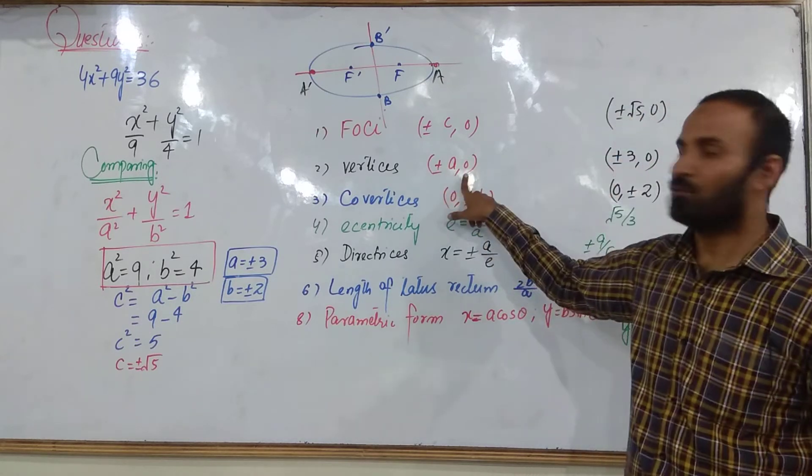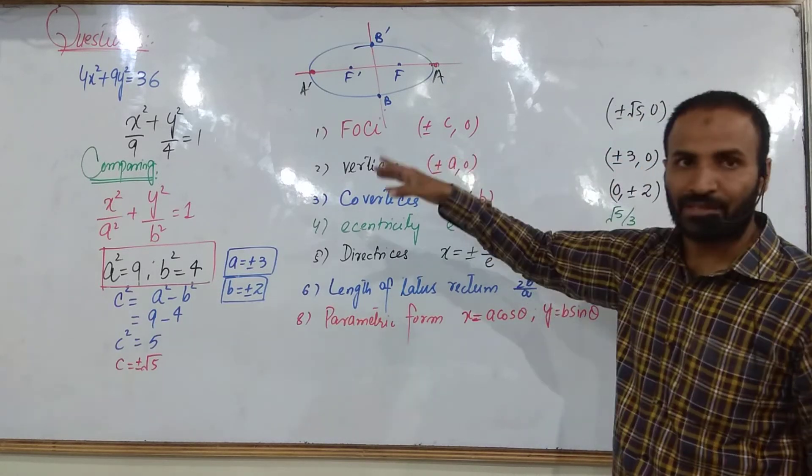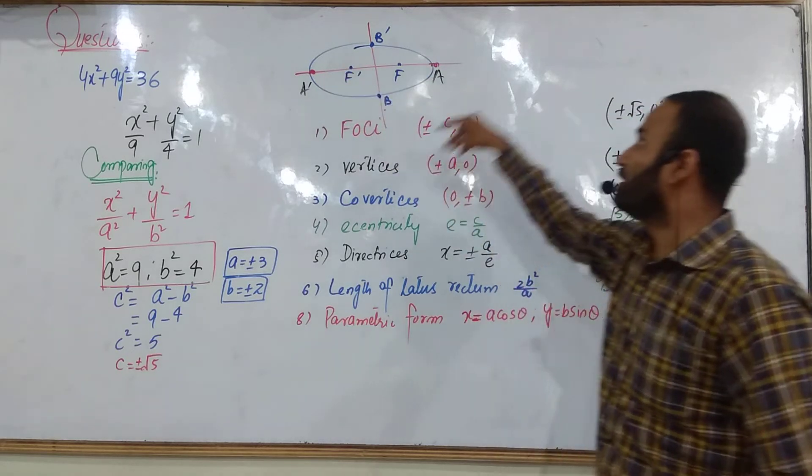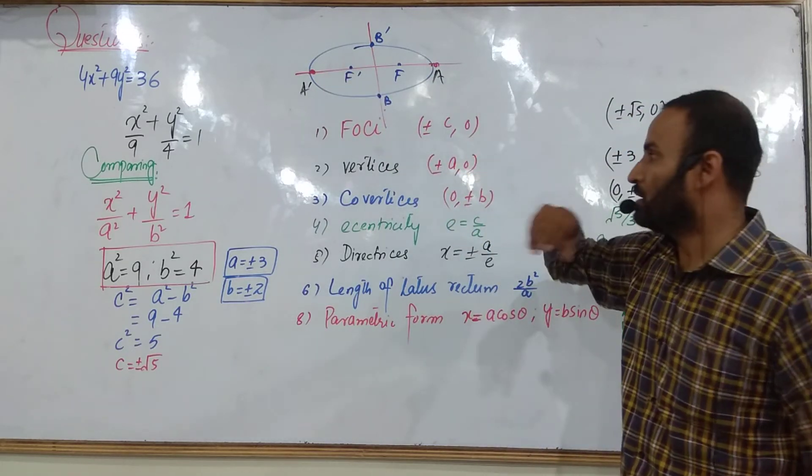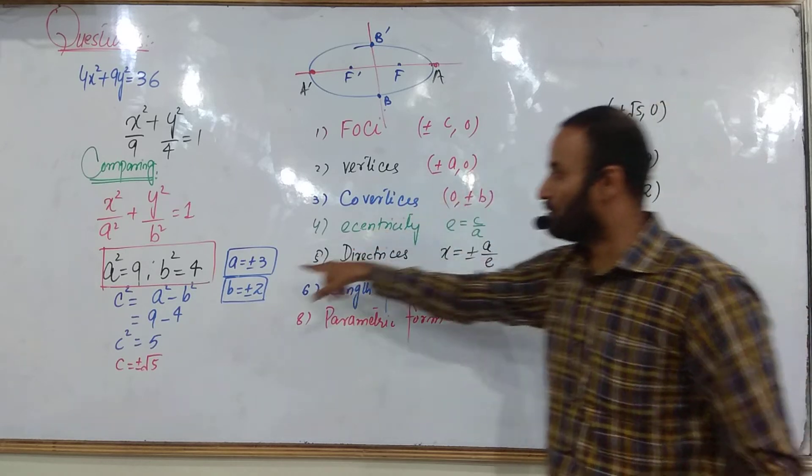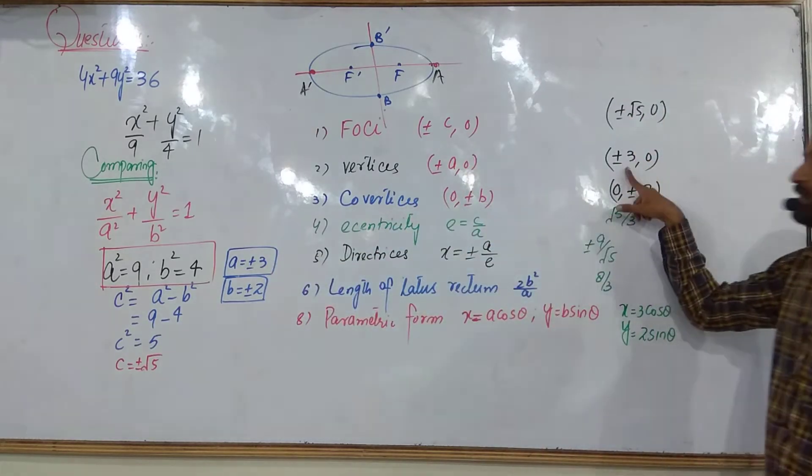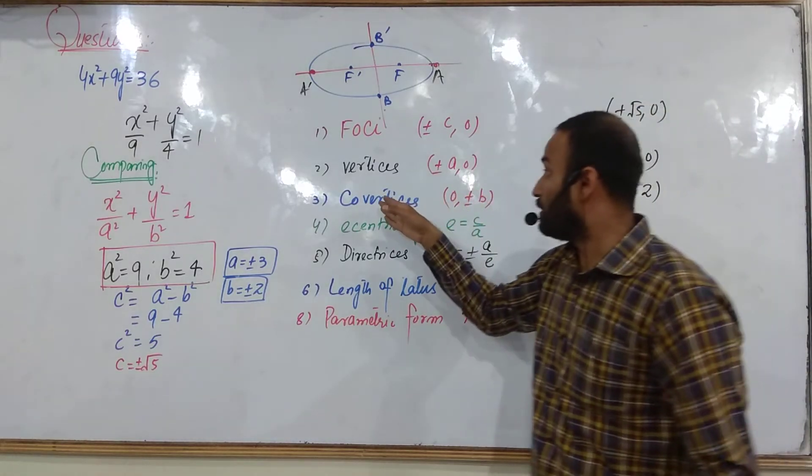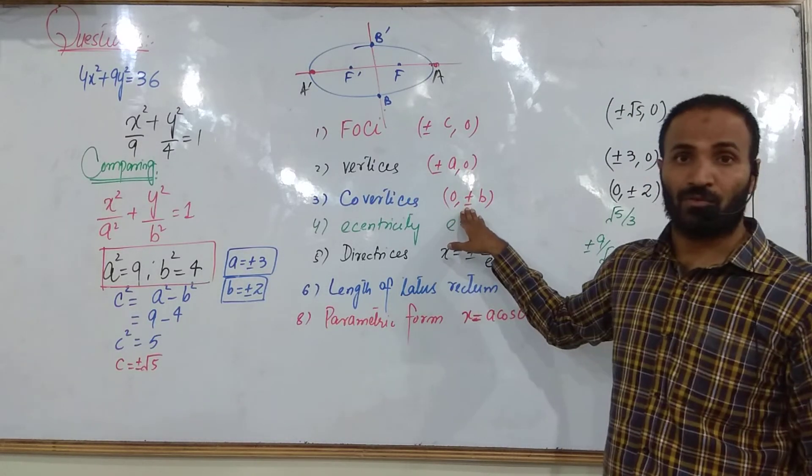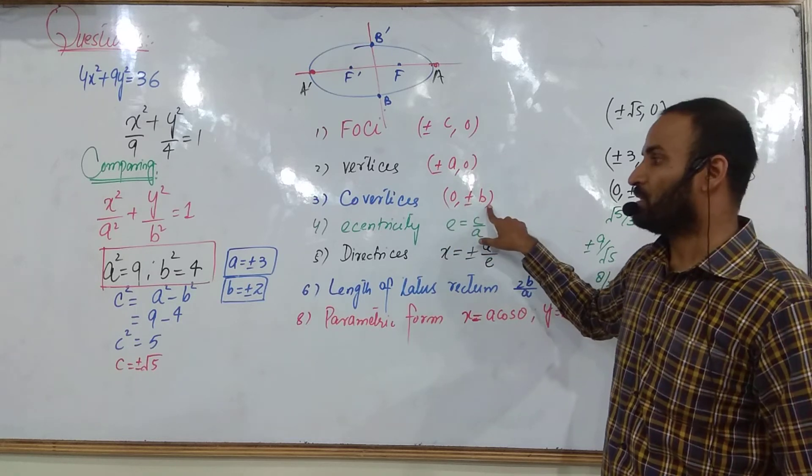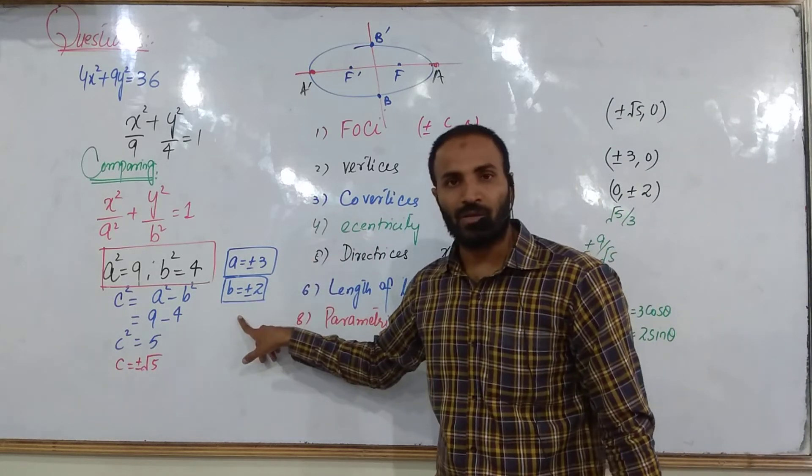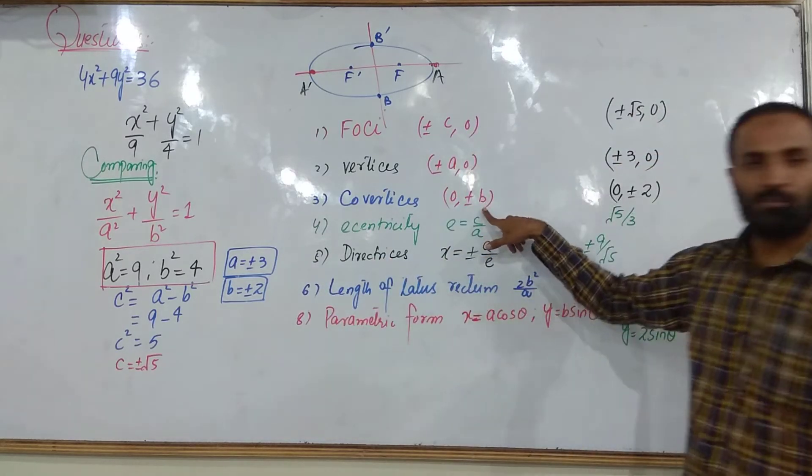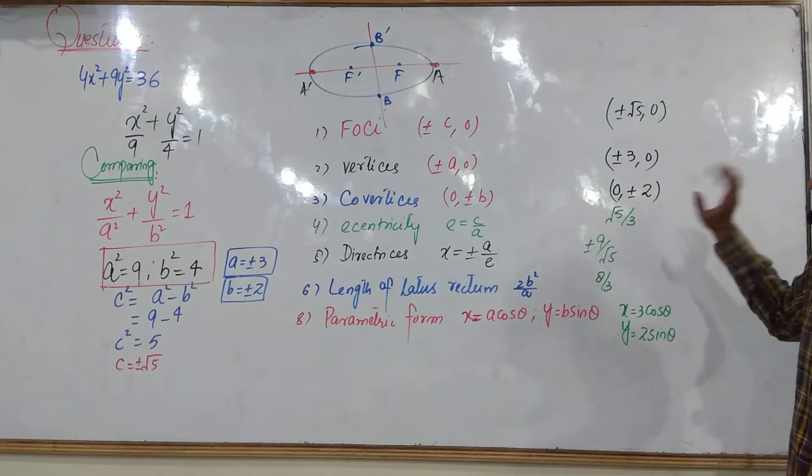Vertices: (±A, 0). You should put here and you will get (±3, 0). For the vertices, you should know about the coordinates of the two vertices. This is (0, ±b). Already you have calculated the value of b that is (±2). So you put the value here and you have four vertices.